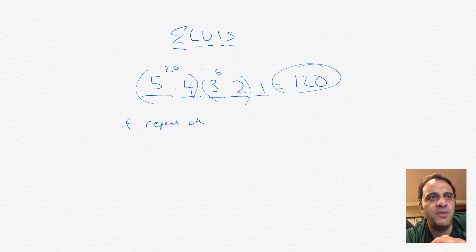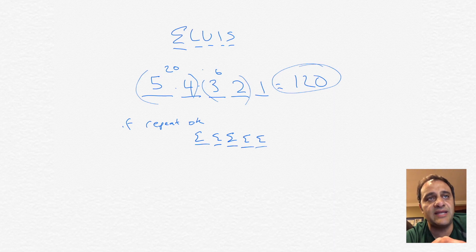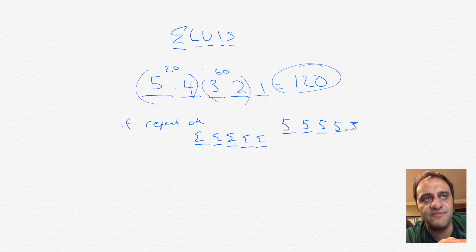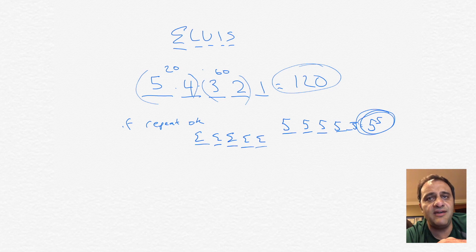Now, if repeating is okay — meaning you can use the same letter over and over again, like E, E, E, E, E — then there are five possibilities for the first letter, five for the second, five for the third, the fourth, and the fifth. So you multiply five times five times five times five times five, which is five to the fifth power. So if you cannot repeat the letters, there are 120 possibilities. If you can repeat, there are five to the fifth power possibilities.